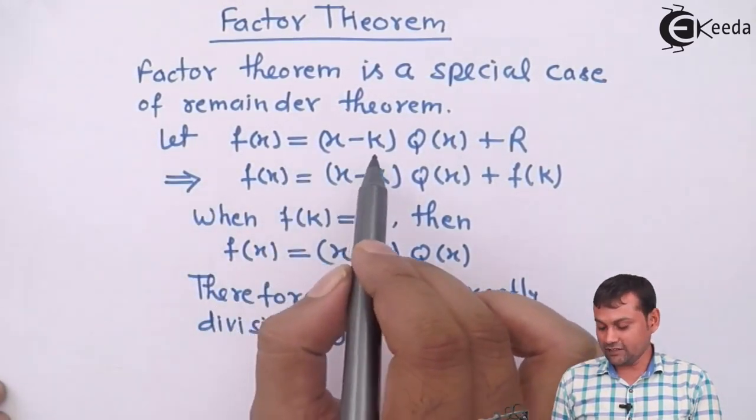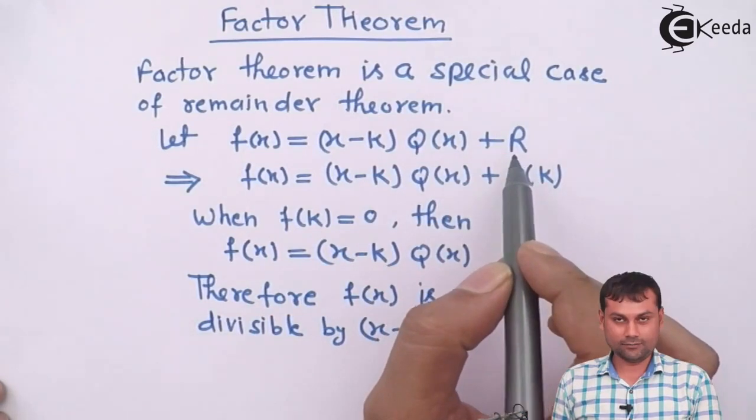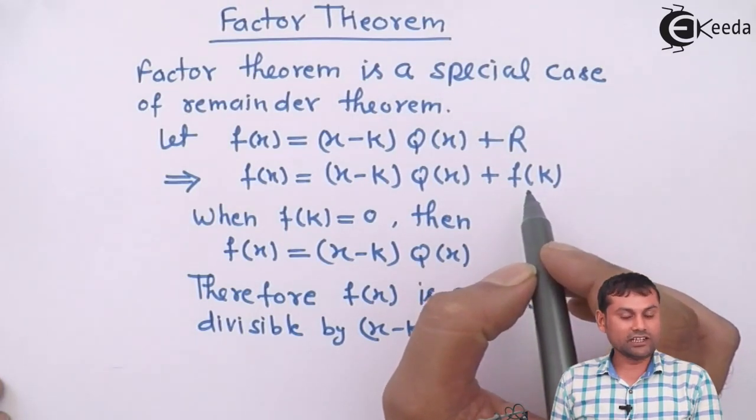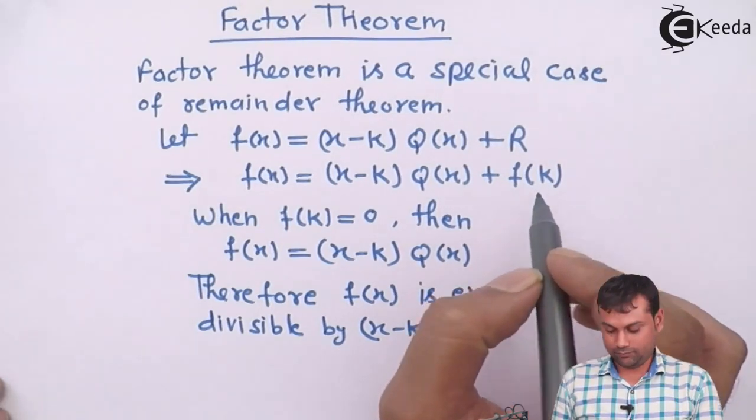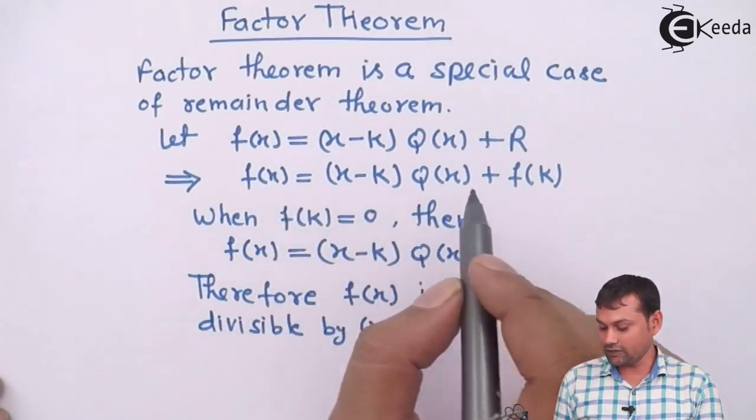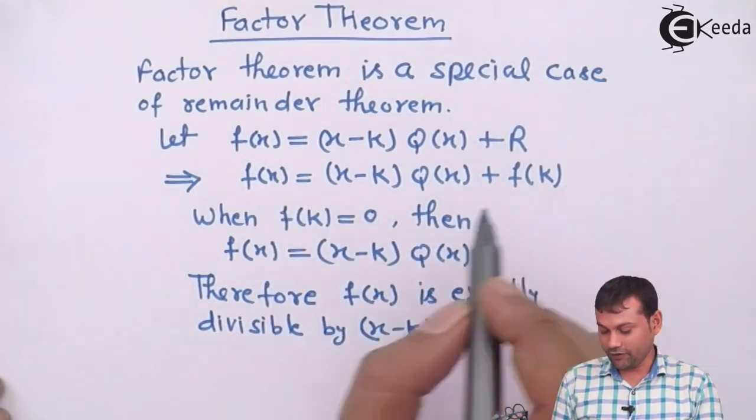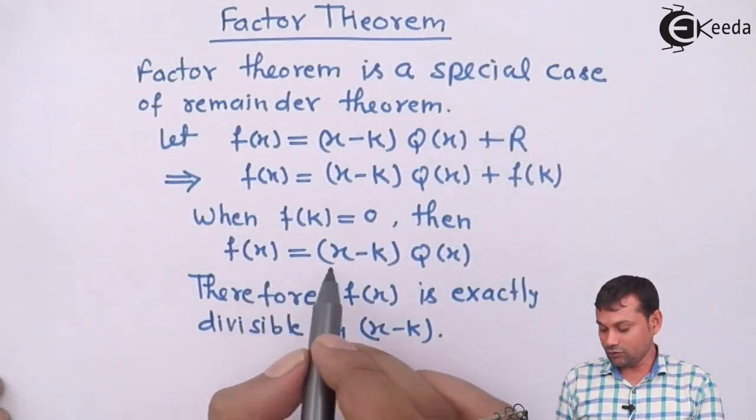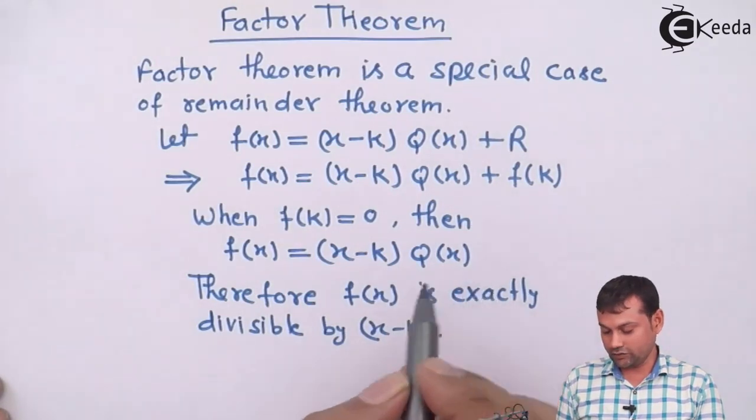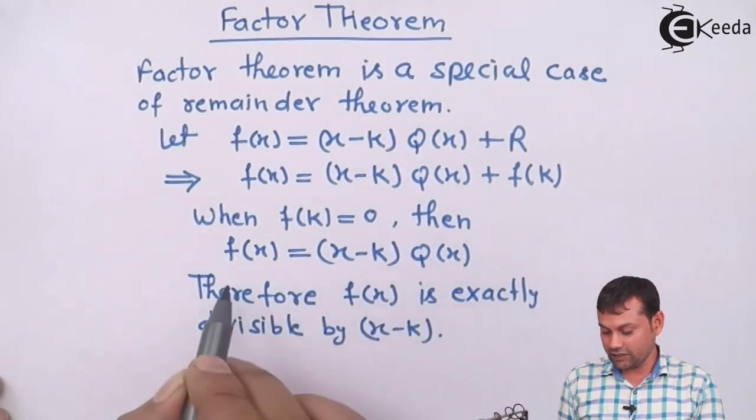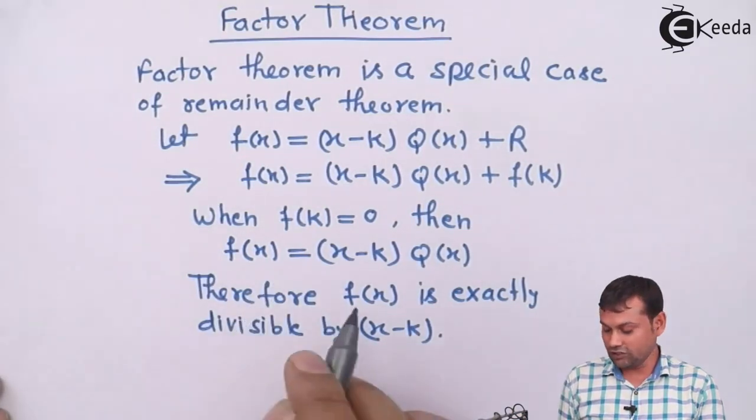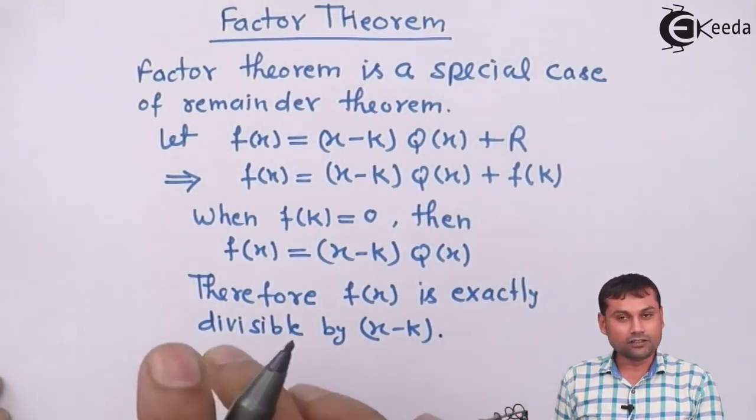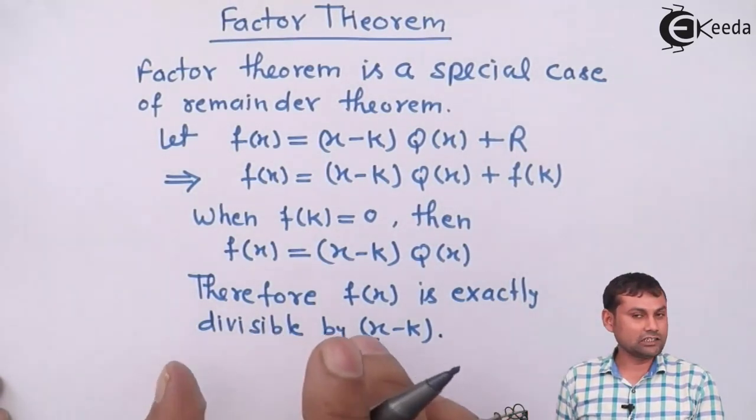Let f(x) equals to (x-k) q(x) + R. And f of k was the remainder in remainder theorem. So f(x) equals to (x-k) q(x) + f(k). When f(k) is 0, then what happens with the equation? f(x) equals to (x-k) q(x). Now you can see that x minus k completely divide by f(x). Therefore, f(x) is exactly divisible by x minus k. This is factor theorem's statement.